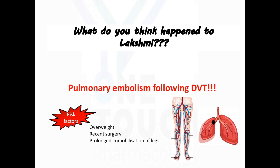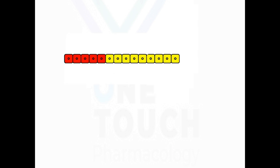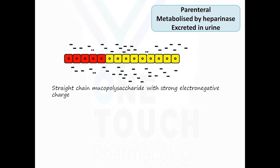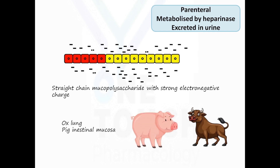Heparin is a straight-chain mucopolysaccharide with a strong electronegative charge. Being highly polar, this drug can be given only parenterally. It is metabolized by heparinase in the liver and excreted in the urine. The source of heparin is ox lung and pig intestinal mucosa.